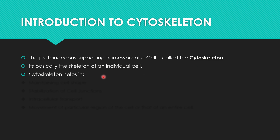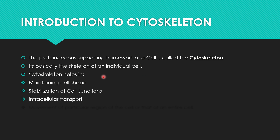The cytoskeleton is the skeleton of an individual cell, as the name indicates. It helps in maintaining cell shape, stabilization of cell junctions, intracellular transport — that is, transport within the cell — and the movement of a particular region of the cell or the entire cell.